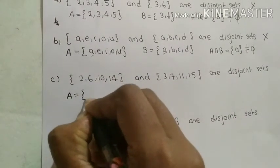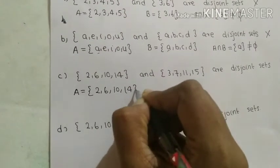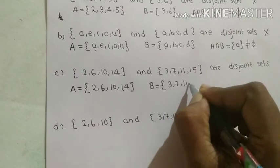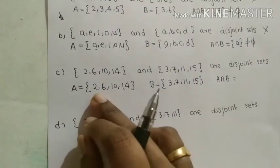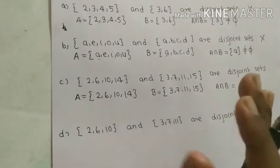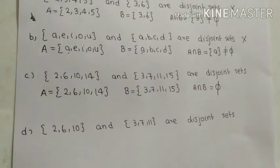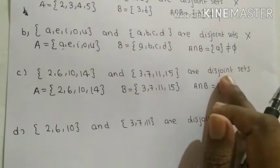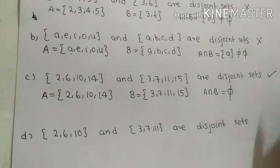The third question: A = {2, 6, 10, 14} and B = {3, 7, 11, 15}. No elements are common in both A and B, so A intersection B equals the null set. Since A intersection B equals null set, the two sets are disjoint sets. Therefore the given statement is true.